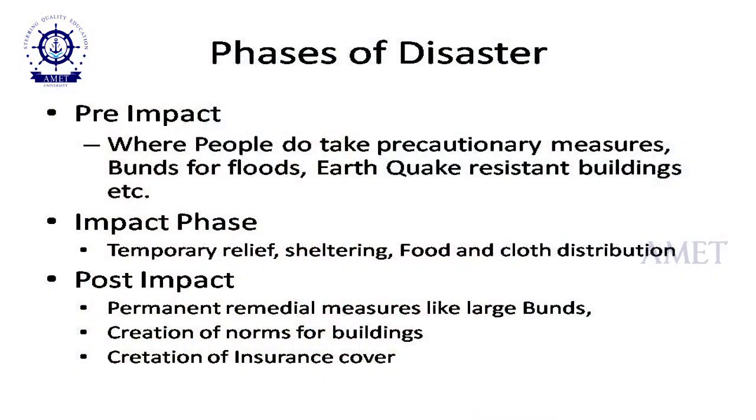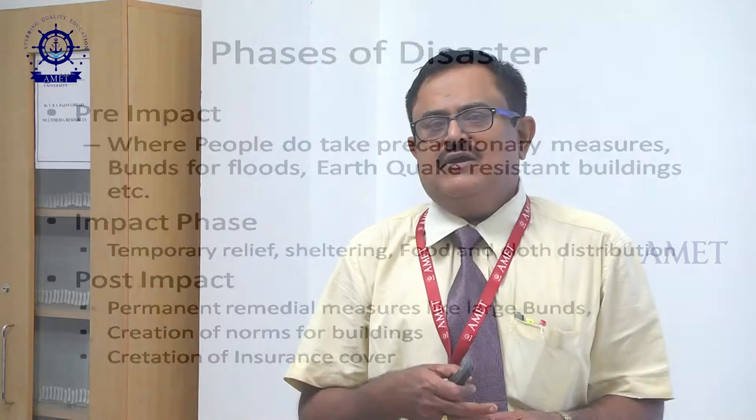Just to give you an example: in Ahmedabad, when the Bhuj earthquake came in 2003, two adjacent buildings had been constructed one year back in 2002. During the earthquake, one building collapsed while the adjacent one stood without any serious damage. The simple reason was they had loaded the overhead water tank for both buildings onto one single building, which liquefied the entire structure and caused it to collapse.